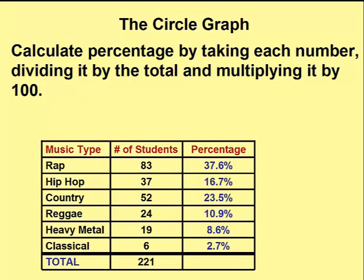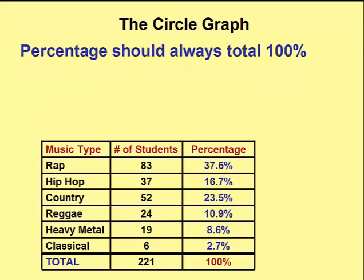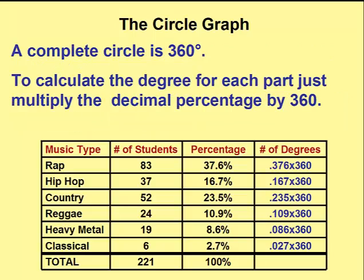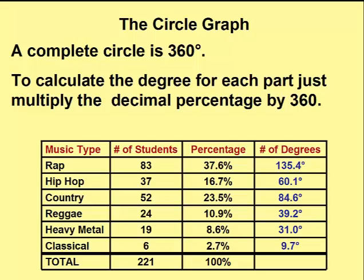To check our answers, it's a good idea to total the percentages — it should work out to exactly 100% or very close. The second thing we have to do is figure out what each percentage represents on a circle. We convert the percentages to the number of degrees by taking the decimal percent and multiplying it by 360, since a total circle has 360 degrees.